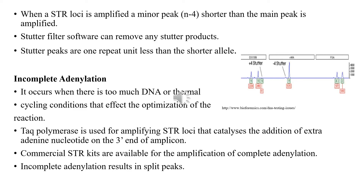Incomplete adenylation occurs when there is too much DNA or thermal cycling conditions that affect the optimization of a PCR reaction. Taq polymerase is used for amplifying STR loci, which catalyzes the addition of an extra adenine nucleotide on the 3-prime end of the amplicon. Commercially available STR kits have been optimized for complete adenylation. Incomplete adenylation results in split or double peaks, and the genotyping software may call one of the alleles as off-ladder or a microvariant allele. The analyst then edits one of the alleles from the electrophoreogram.